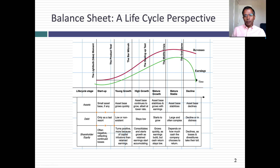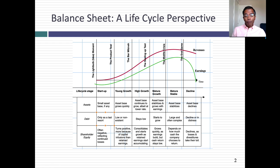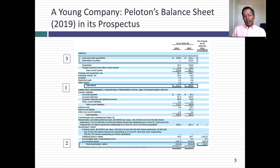Then as a mature growth company, your asset base will stabilize. Your debt will start to grow and your equity will start to reflect the fact that you're now a mature growth company — it'll grow because your retained earnings will build up. And then as a mature stable company, your asset base is now stable, your debt is often large and growing. Your equity might actually shrink because of how much cash you return — large dividends, stock buybacks often funded with debt. Going into decline, your asset base will start to decline, and if you're a healthy company, debt should decline with the asset base. So let's look at companies across the life cycle to see how balance sheets play out.